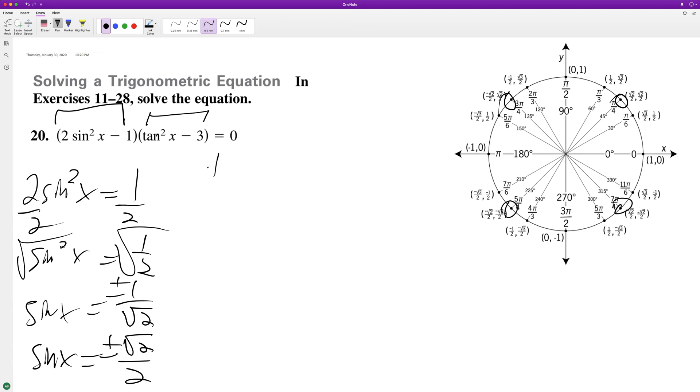And then tangent squared of x equals 3, square root of both sides. Tangent of x is equal to plus or minus the square root of 3. That's going to be true at square root of 3. Because it's y over x, so square root of 3 over 2 divided by 1 half is equal to square root of 3.